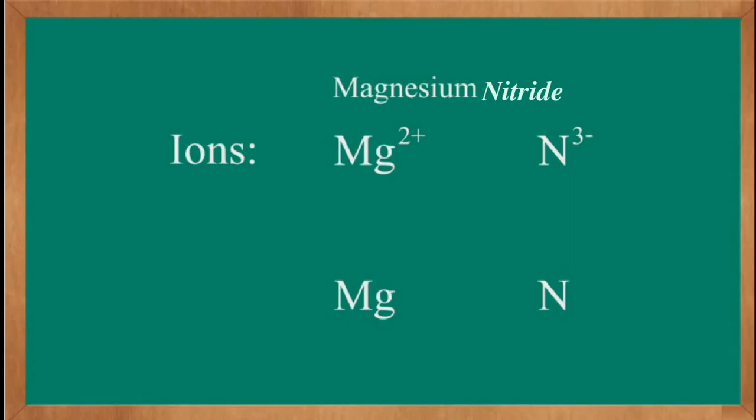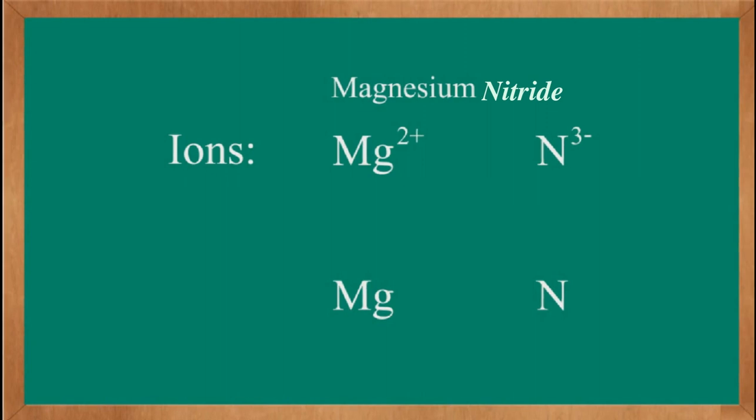Now we are going to write another formula, magnesium nitride. Magnesium ion is Mg²⁺, and nitride ion is N³⁻.